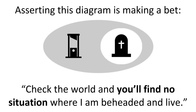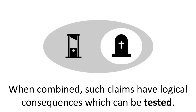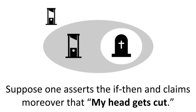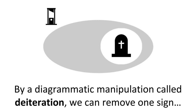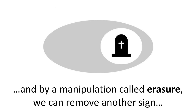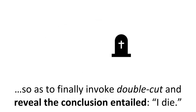Asserting this diagram is making a bet. Check the world and you'll find no situation where I am beheaded and live. When combined, such claims have logical consequences which can be tested. Suppose one asserts the if-then and claims moreover that 'my head gets cut.' By a diagrammatic manipulation called de-iteration, we can remove one sign. And by a manipulation called erasure, we can remove another sign, so as to finally invoke double-cut and reveal the conclusion entailed: I die.